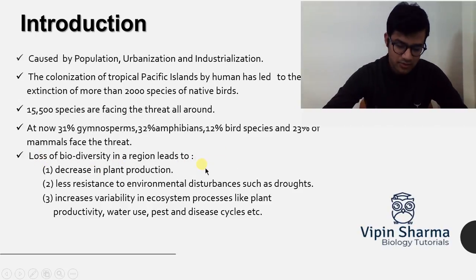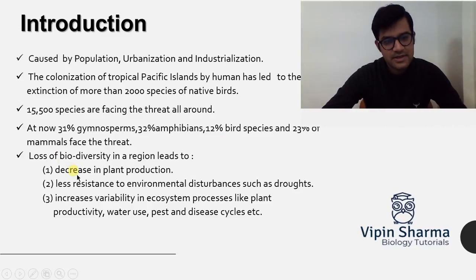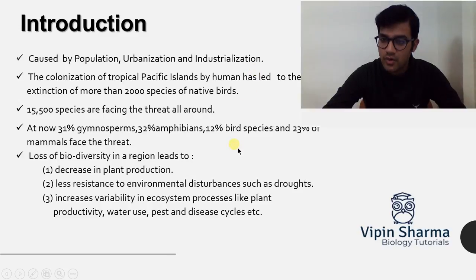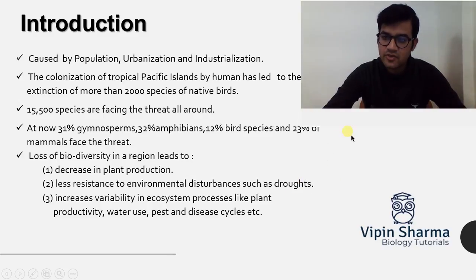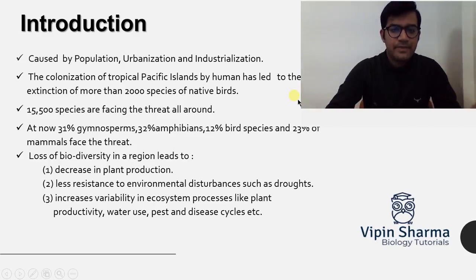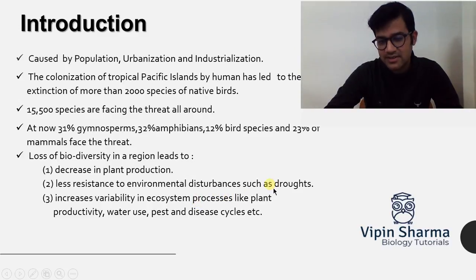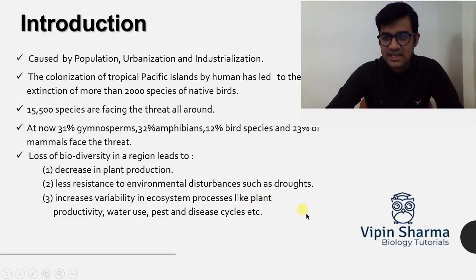What happens if we lose our biodiversity? First, there will be a decrease in plant production — if we remove all plants from an area, plant production definitely goes down. Second, there will be less resistance to environmental disturbances such as drought. Greater species richness allows an ecosystem to remain stable and handle drought, rainfall losses, and other issues. With biodiversity loss, that function is hampered. Third, there will be increased variability in ecosystem processes like production, water use, and disease cycles.